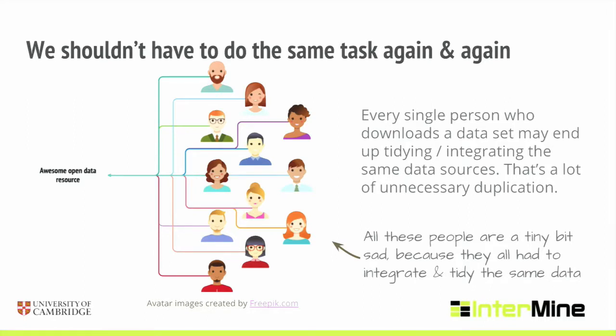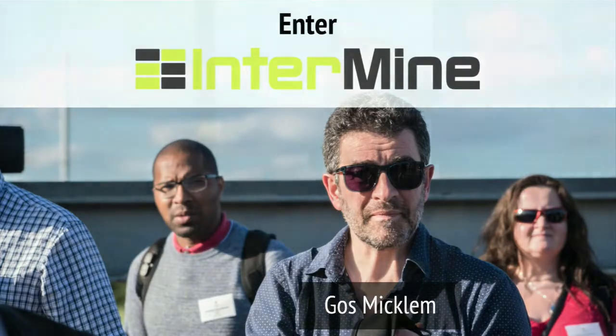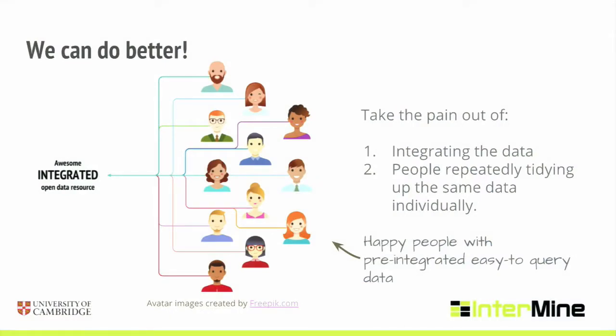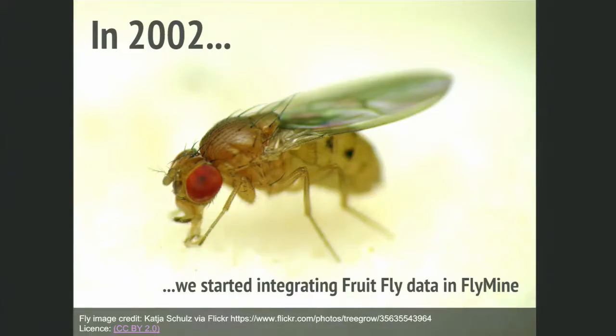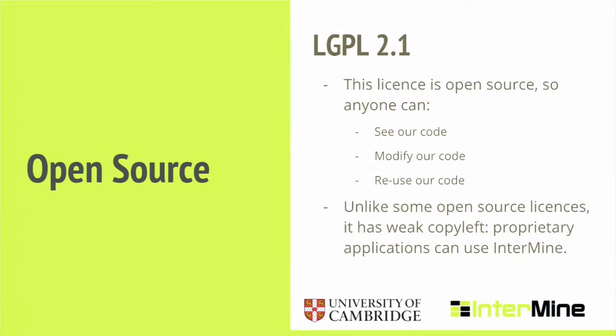My PI, Gus Michlin — I love this photo by the way — said, can we make this better? Can we pre-integrate it for people, make it easier to query, and then make that a resource that anyone can use? And so as a result, FlyMine was born. I'm pretty sure this is a fruit fly, but if anyone knows better, please tell me. FlyMine was designed to be open source with an LGPL license, which means that whilst it is open, people can also take it proprietary if need be, making it really flexible.